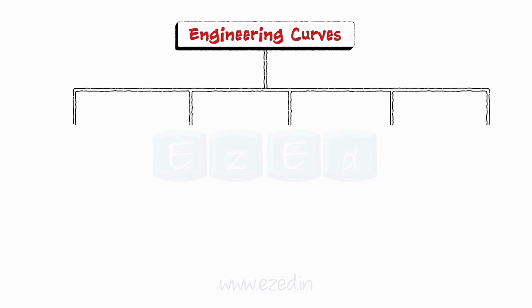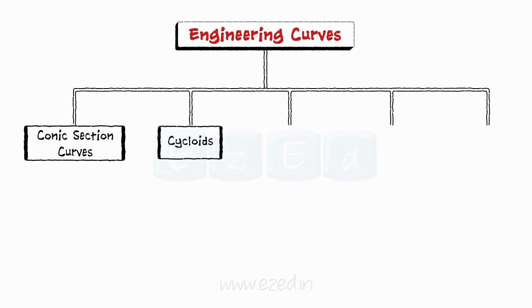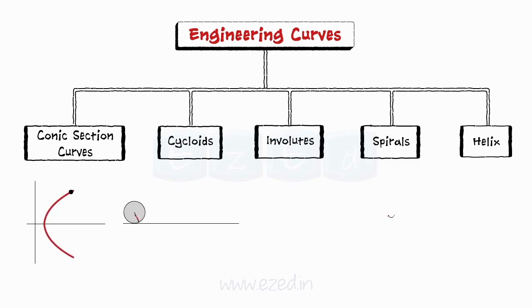Some of the engineering curves are conic section curves, cycloids, involutes, spirals and helix. These curves are generated by moving a point in a single plane, except helix, and so they are also called as plane curves.